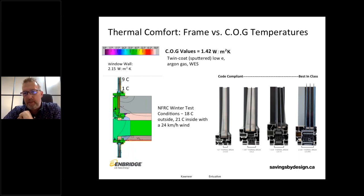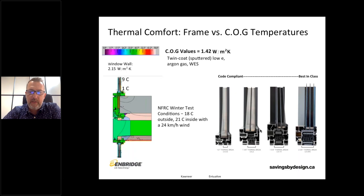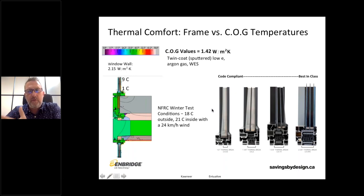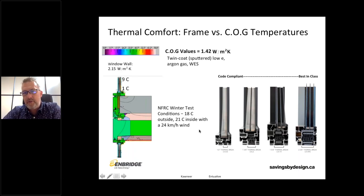Another discussion we can't leave out is resilience: what happens during a power outage in winter or summer? Will the fenestration design help increase the resilience of the building and the ability for tenants to shelter in place, or will they have to leave very soon after a power outage because temperatures become too cold or too warm? Generally we're looking at about 72-hour resilience, though third-party standards look at resilience up to two weeks after a power outage — an interesting factor to consider in fenestration design.